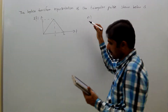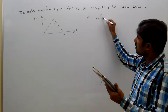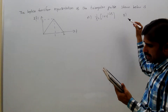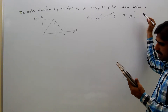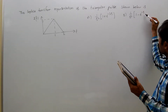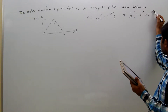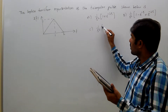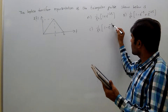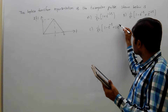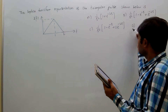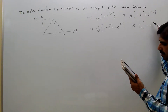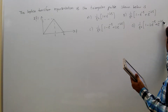Option A: 1 by S square, 1 plus e power minus 2s. Option B: 1 by S square, 1 minus e power minus 2s. Option C: 1 by S square, 1 minus e power minus s. Option D: 1 by S square, 1 minus 2e power minus s plus e power minus 2s.